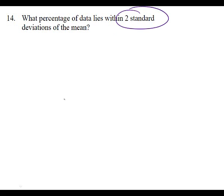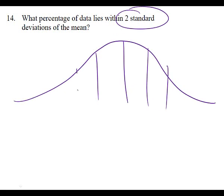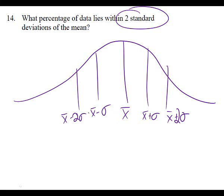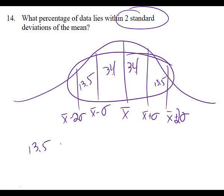What percentage of data lies within two standard deviations of the mean? It's something you could memorize, but if you know your percentages you can work it out. Working from the mean out to two standard deviations in each direction: I need 13.5 plus 34 plus 34 plus 13.5. What do we end up with? 95%.